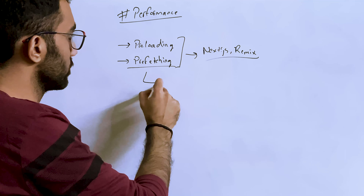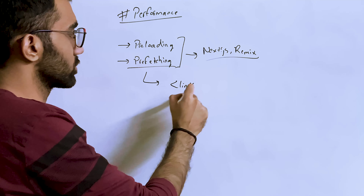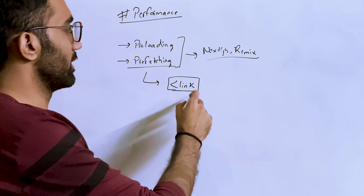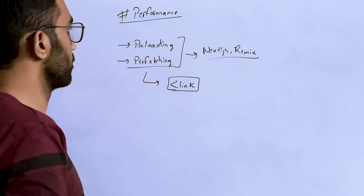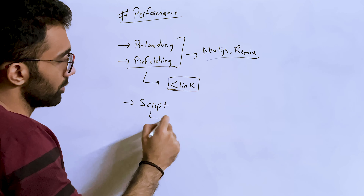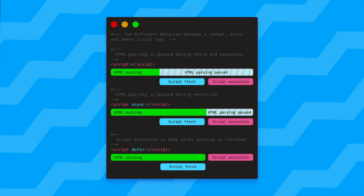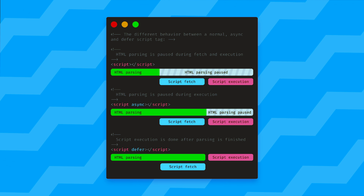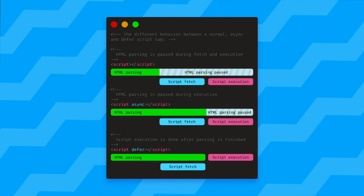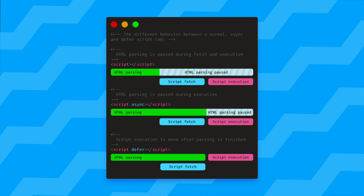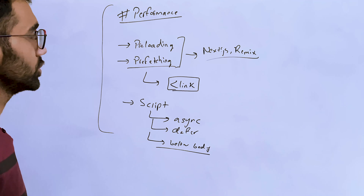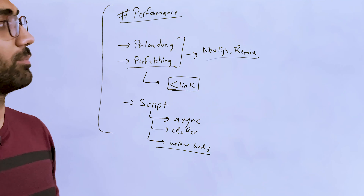Pre-loading and pre-fetching are done through link tags — no JavaScript involved, although you can do some pre-loading with JS as well. Similarly, placement of the script tag is also important: choosing between async or defer, and where you put it — below the body — is an important point so you don't block rendering of the main page.